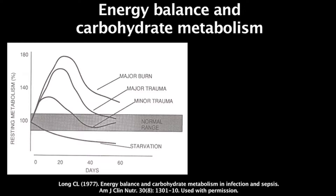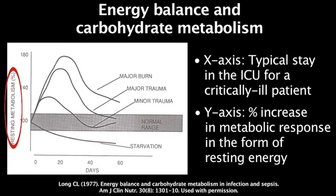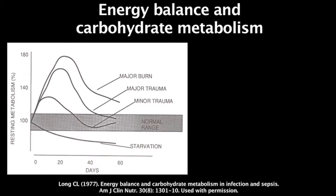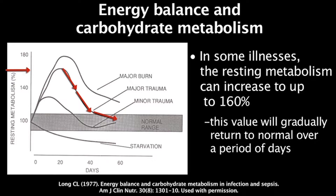The characteristic diagram that Long and colleagues suggested in 1977 plots typical ICU stay in days on the x-axis against the percentage increase in metabolic response in the form of resting energy expenditure on the y-axis. This resting energy expenditure increases to almost 160% in some types of illness, and then over a period of days gradually comes back toward normal.